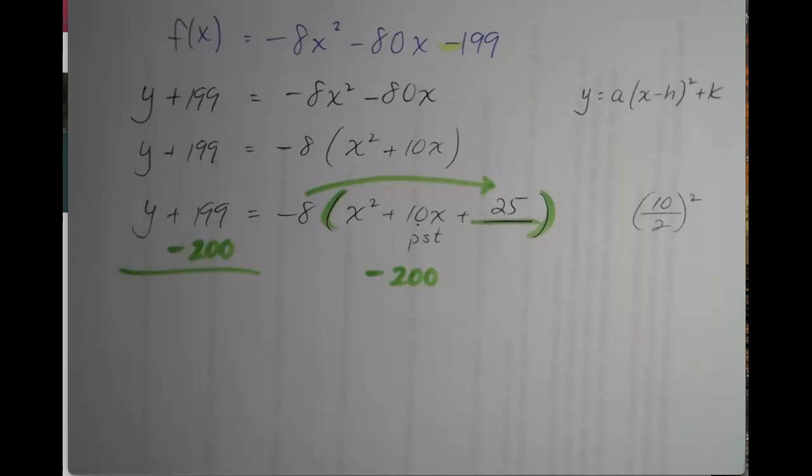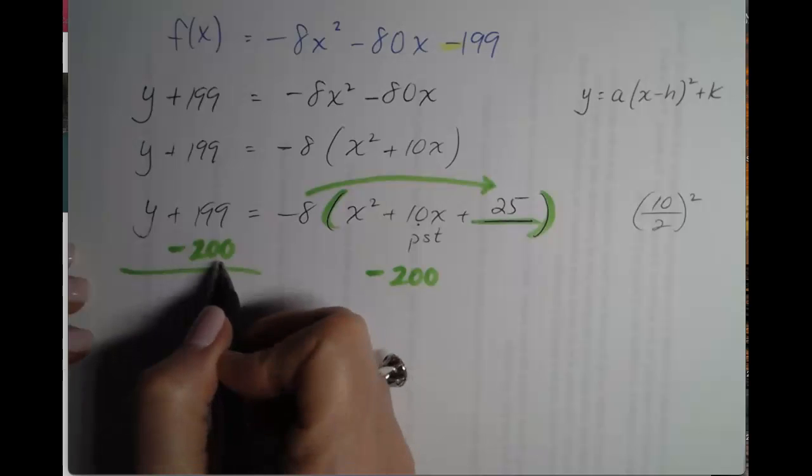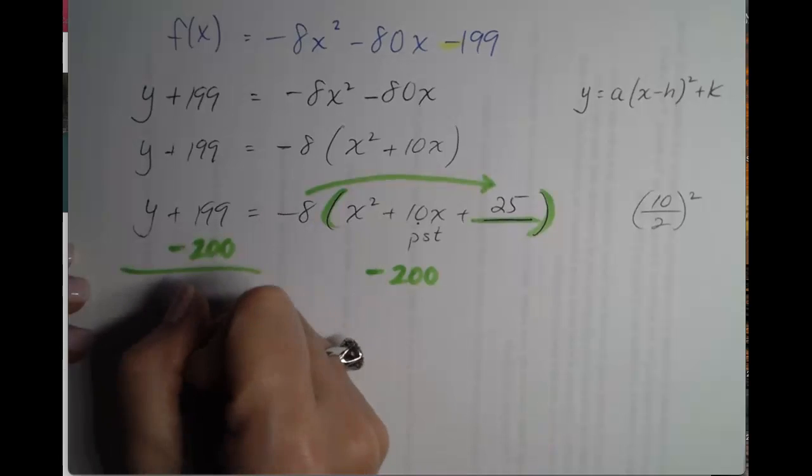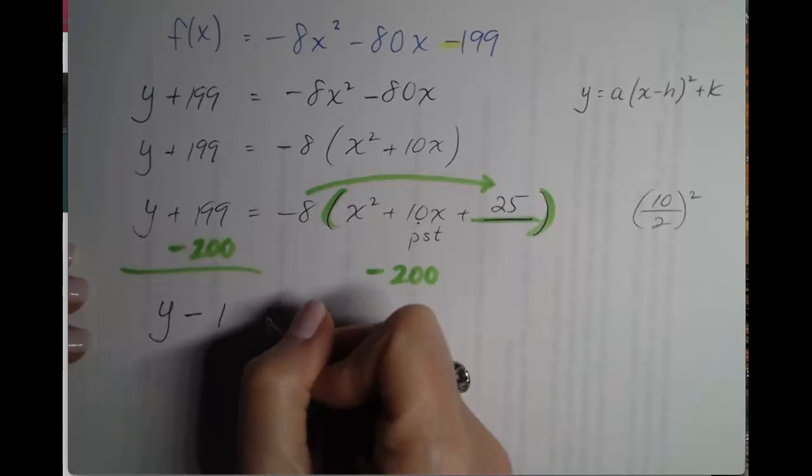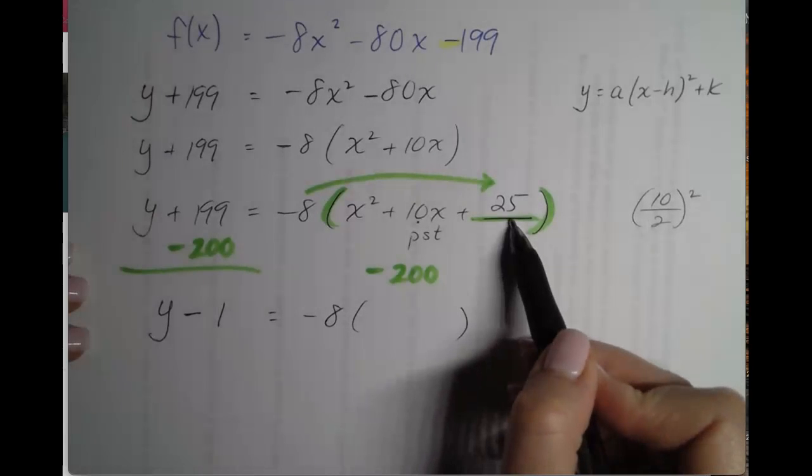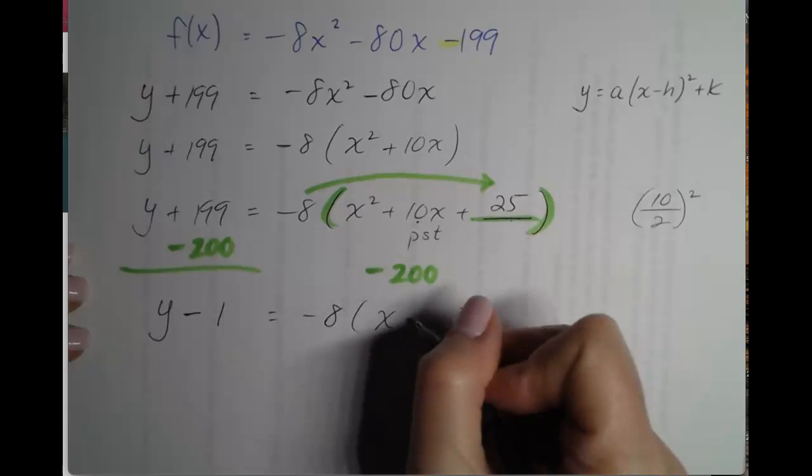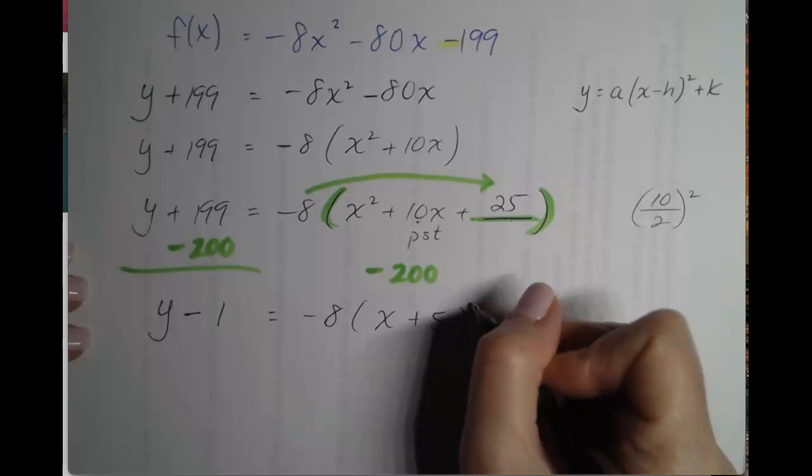So now we can simplify and factor. 199 minus 200 is 1. So y minus 1 equals negative 8. Now let's factor. Factors of 25 that add up to 10 are 5 and 5. So x plus 5 squared.